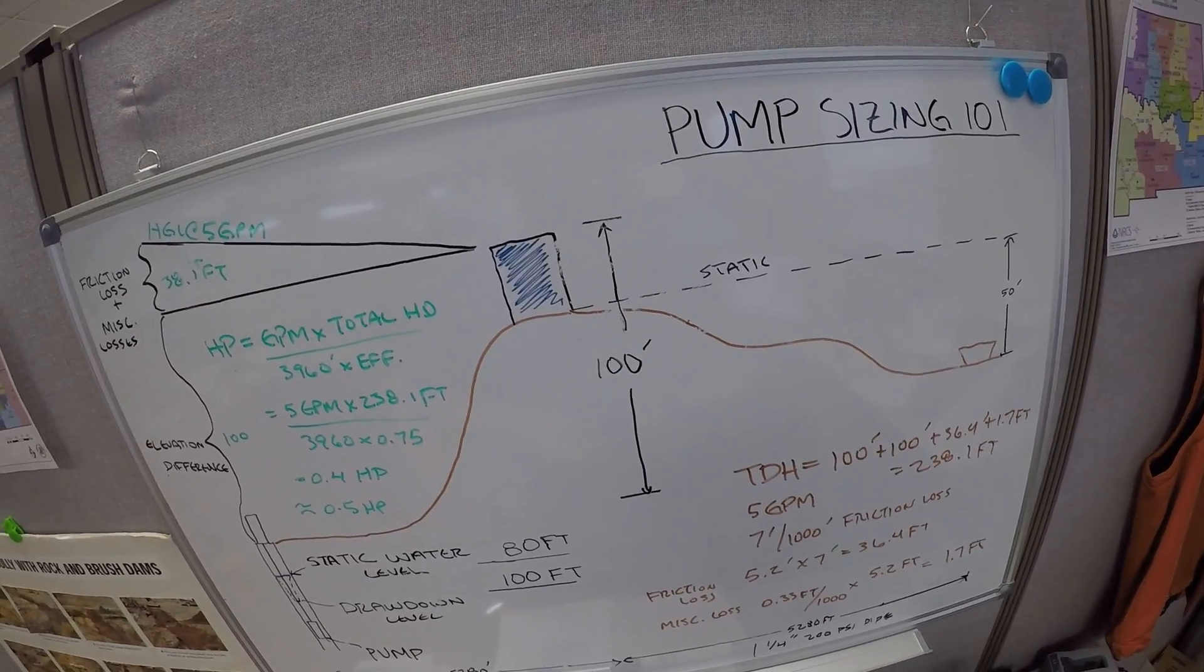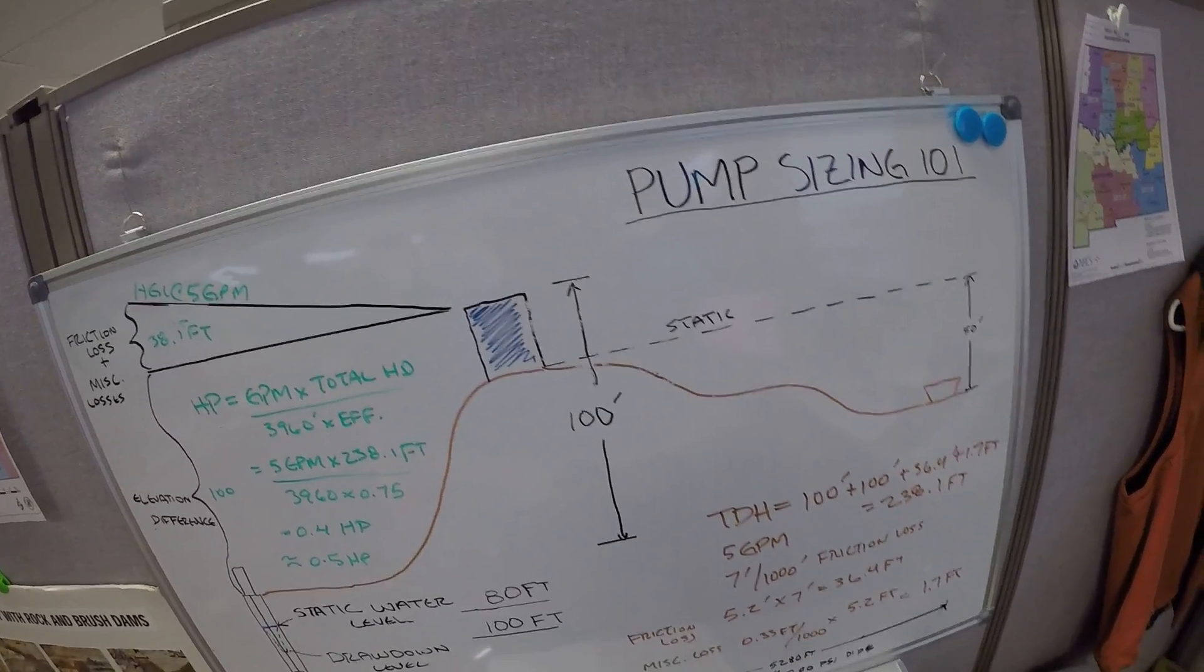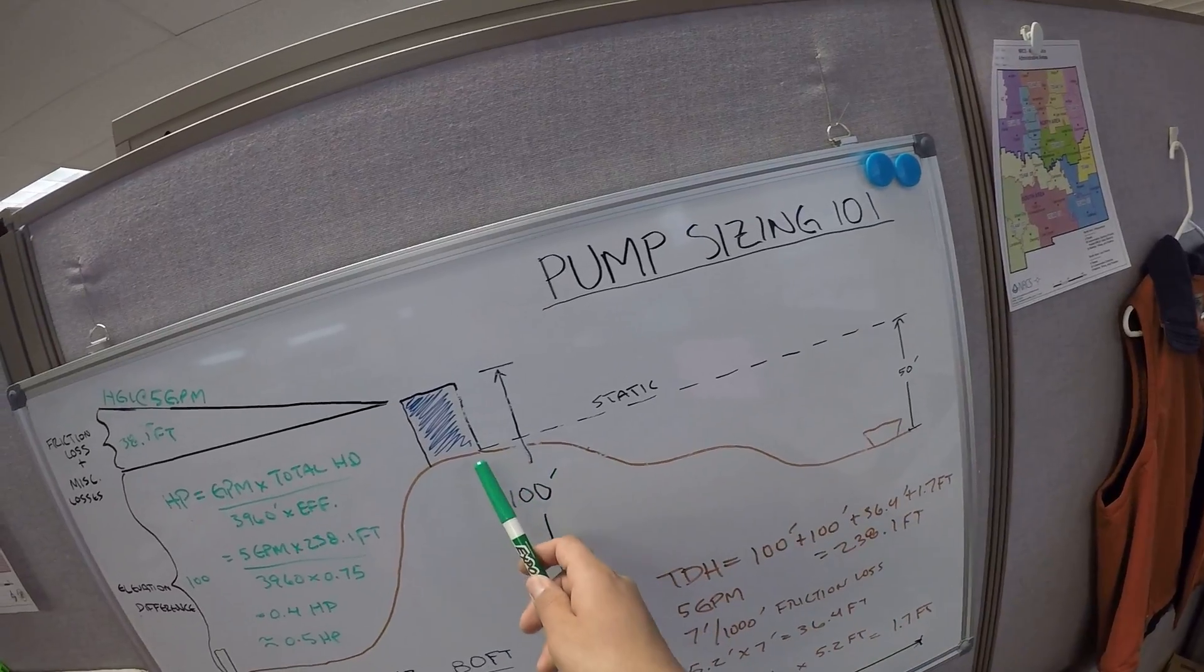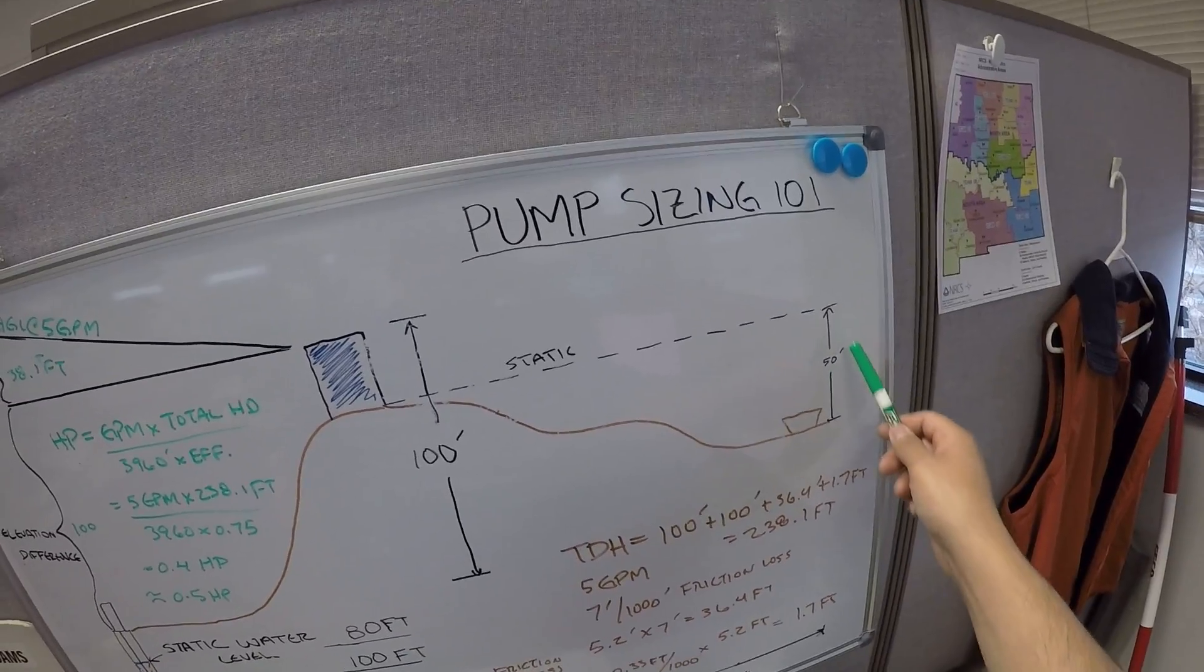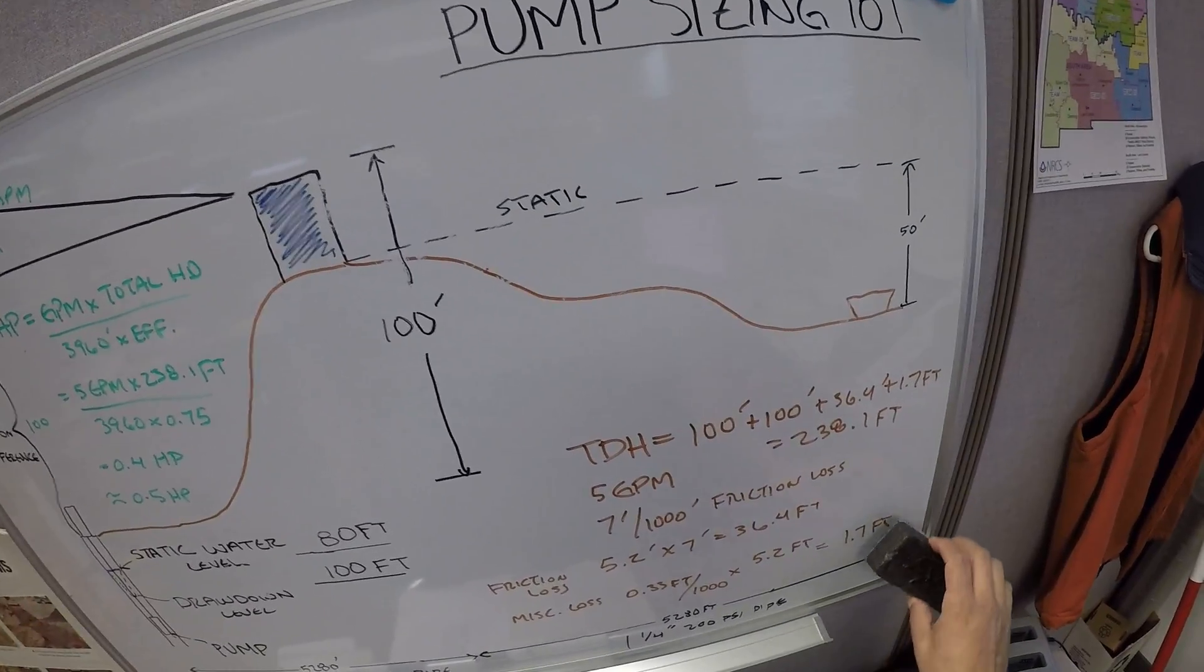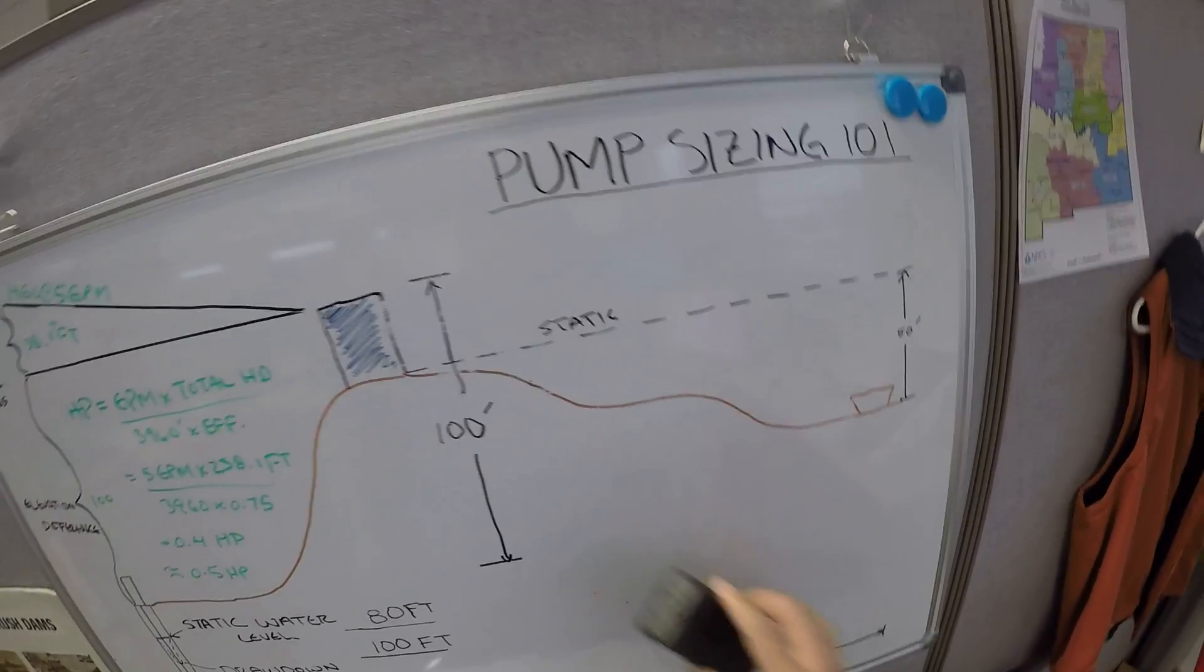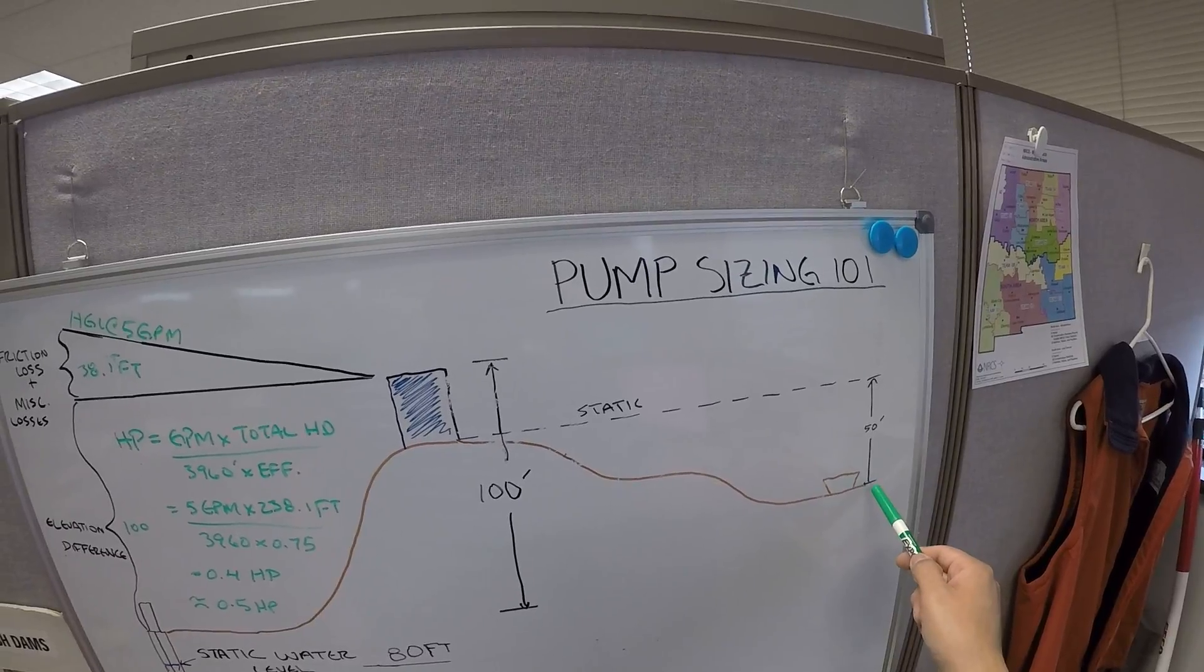So for the gravity portion of the pipeline, in this case I'm going to assume that from the tank, where the tank's at, to where the trough's at, there's a 50 foot difference. I'm going to get rid of all this.